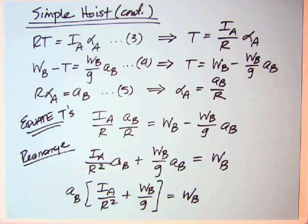I is mass moment of inertia, mass length squared. Divided by that would give you a mass, so that's a mass term. Clearly WB over G is a mass term, so everything seems to be okay. Mass times acceleration is a weight.